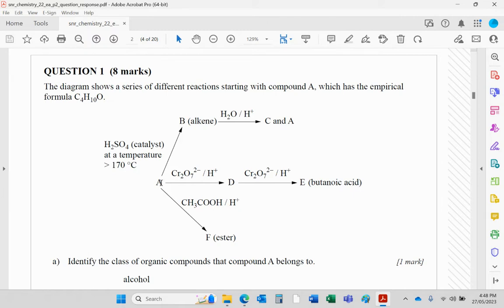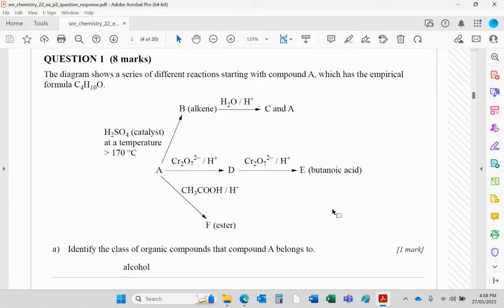It forms D and that's further oxidized to a carboxylic acid, so this would be an aldehyde and A would be a primary alcohol for that to happen. The QCAA marking guide just says alcohol. I would have personally put primary alcohol there. They're certainly not going to mind if you put the word primary in as well.